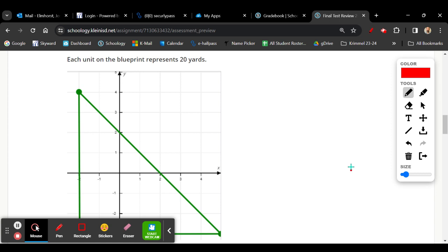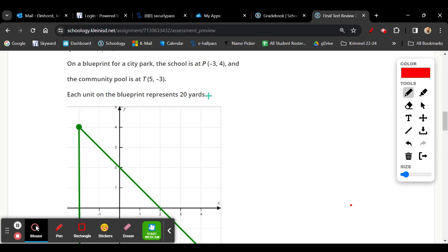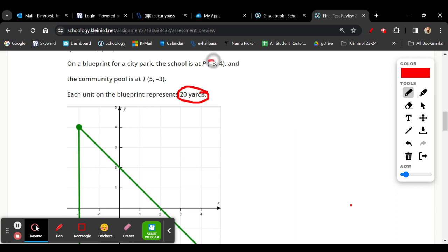Next one, we're plotting a couple points. I believe the graph is off by one, but let's just use the graph for this. And within the blueprint, it says each blueprint unit, each unit is 20 yards. So we're going to find this would be negative 2, 4, and then 5, negative 3.